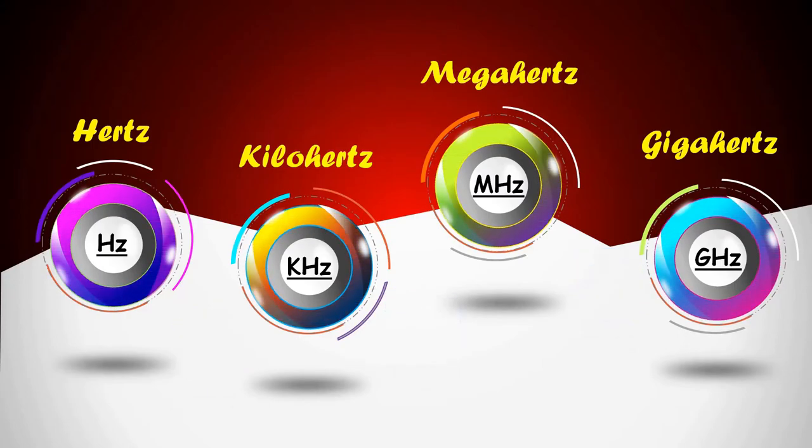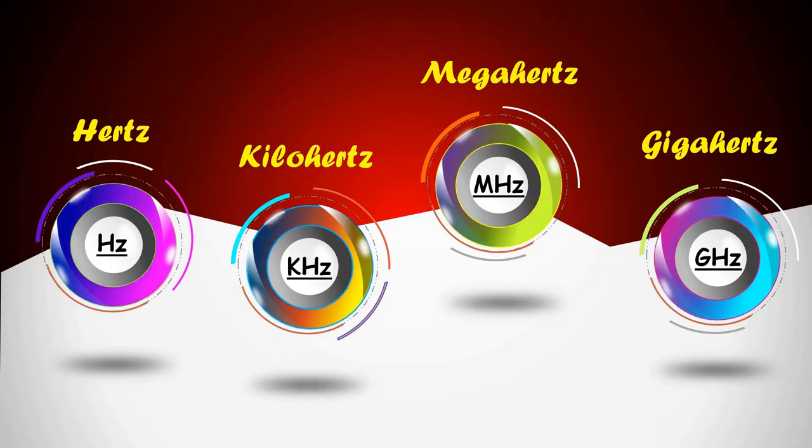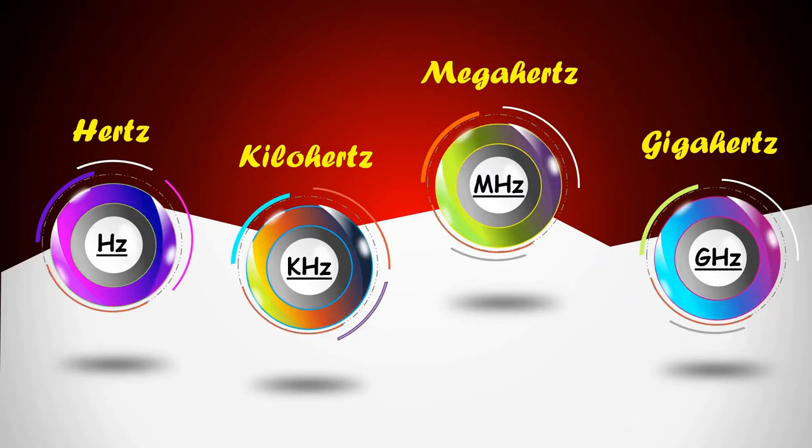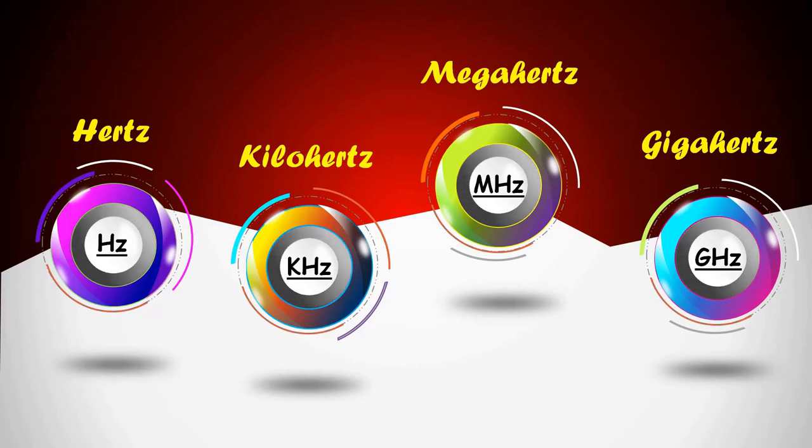These are the various units used for frequency. But what is frequency? Frequency is number of times a particular thing happens in a fixed time period.